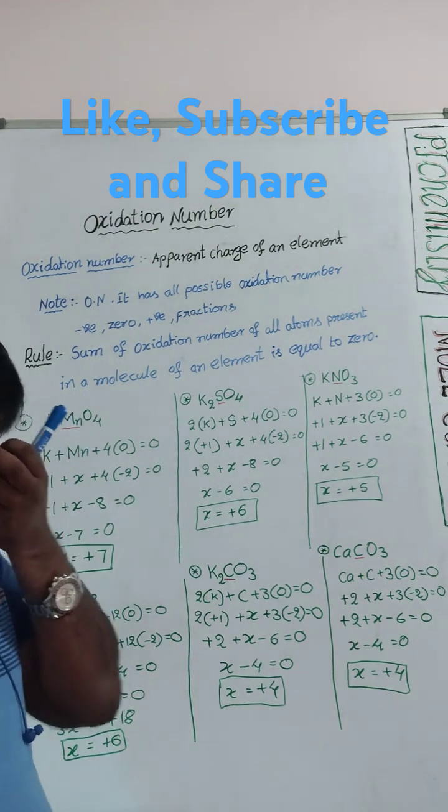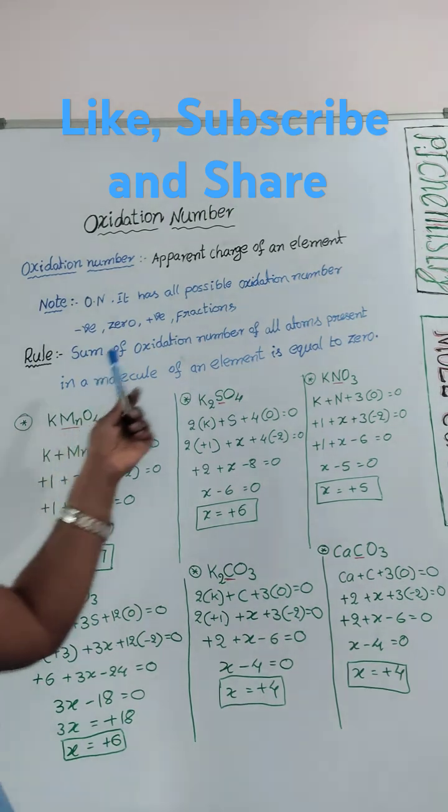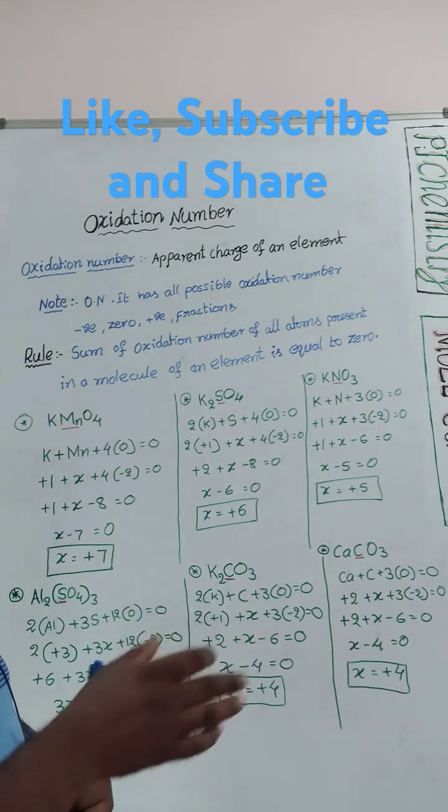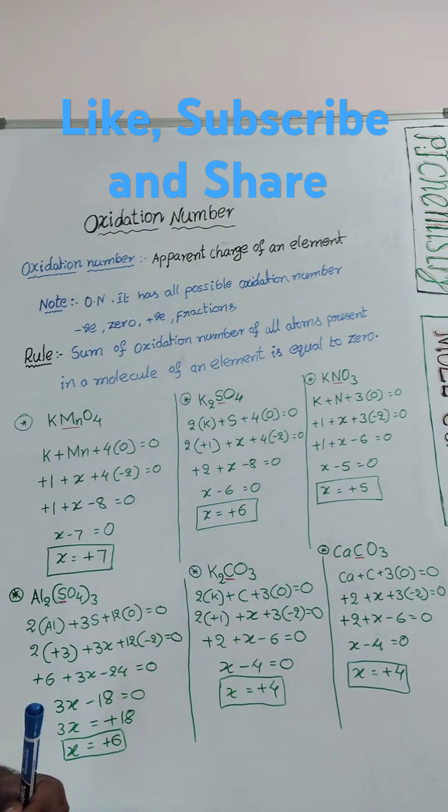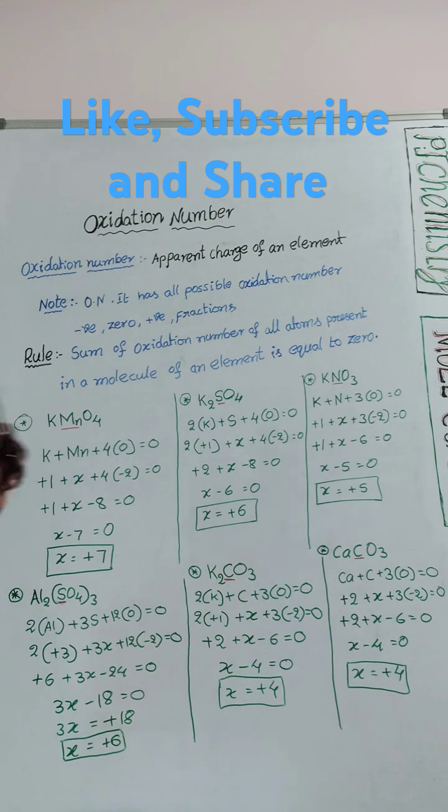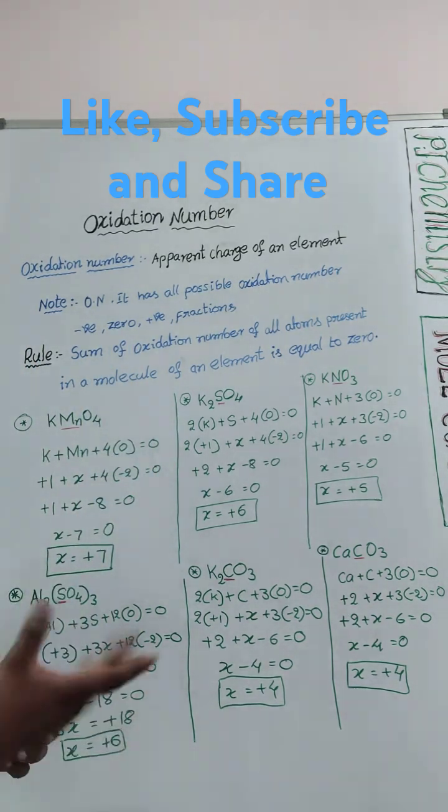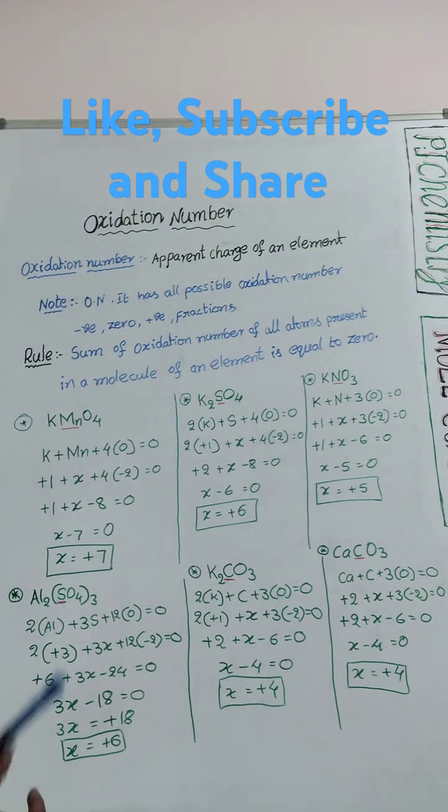The first rule of oxidation number: sum of oxidation number of all atoms equals zero. That is rule 1. As per this rule, we are going to do maximum calculations to find out oxidation numbers.